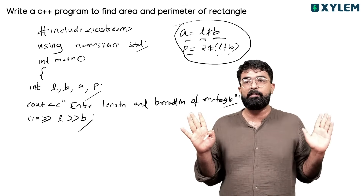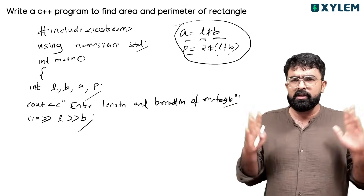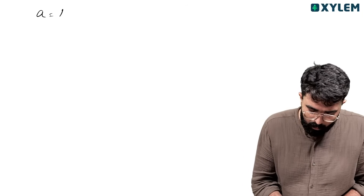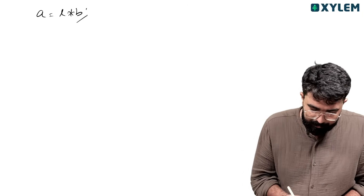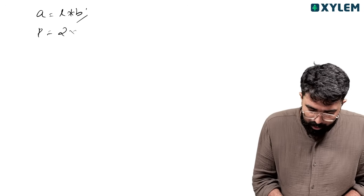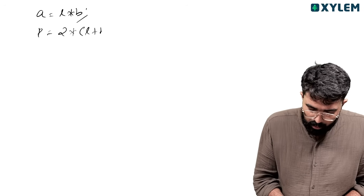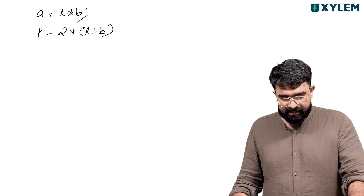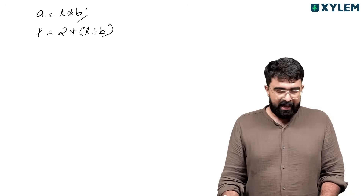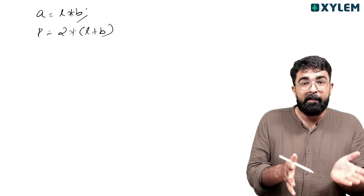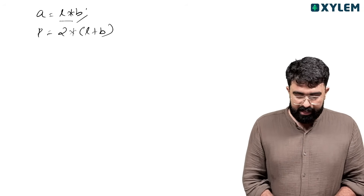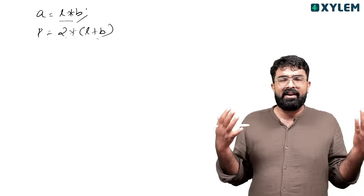There are 2 variables to input: L and B. Input area — a is equal to L into B, then P is equal to 2 into L plus B. So a equals L into B, P equals 2 into L plus B — then we are going to print this. Area is stored, and 2 into L plus B is stored, then P is stored.